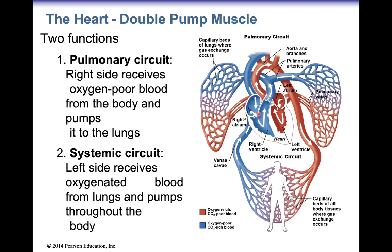The right side of the heart is always going to be pumping oxygen-poor blood out, and the left side is always going to be pumping oxygen-rich blood out. Your body will use that oxygen-rich blood, take the oxygen from it, and send the oxygen-poor blood back to the right side of the heart. That right side will pump that deoxygenated blood into the lungs to drop off CO2, pick up new oxygen, and send that newly oxygenated blood back to the left side.